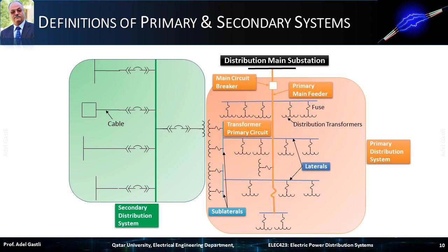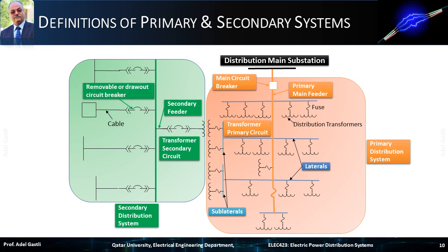When the secondary circuits of the transformers are represented, we call it the secondary distribution system, shown in green color here. In the secondary distribution system, we can have secondary feeders connected to the transformer secondary circuit. We can also have removable or draw-out circuit breakers for each feeder connected to the main bus bar, as well as a panel board and bus duct.